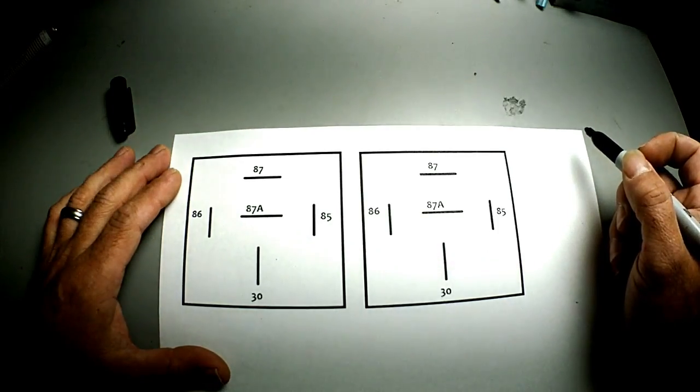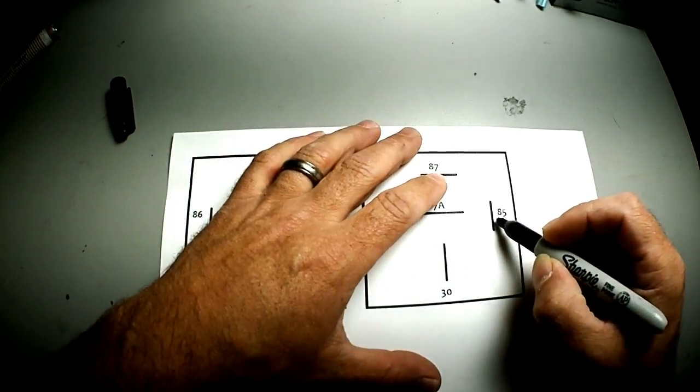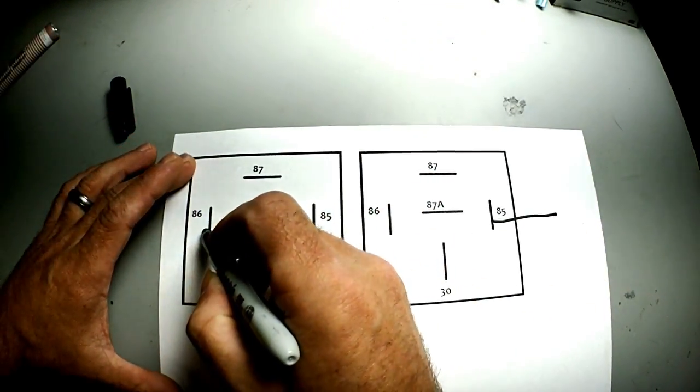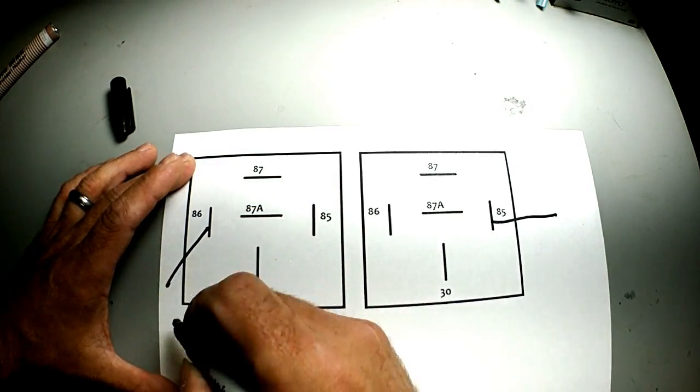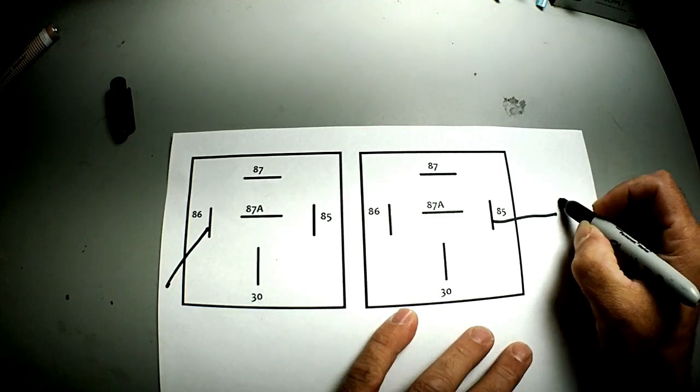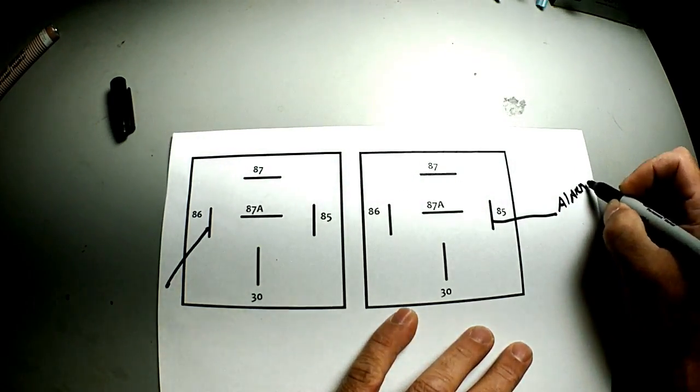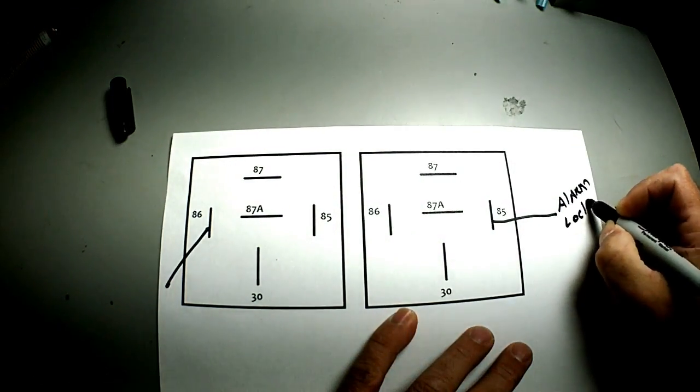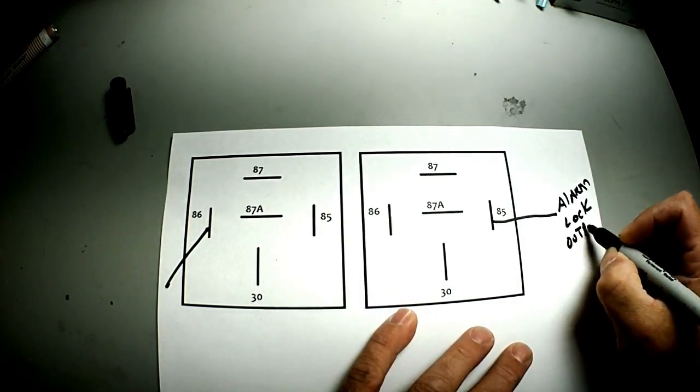All right, it's not that hard to do. We're going to take 85 on that relay, 86 on this relay, and they're going to go to your alarm lock outputs.